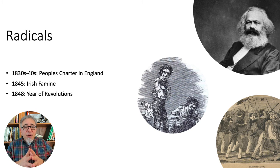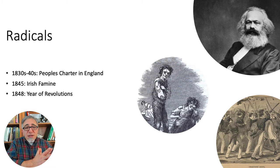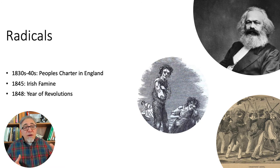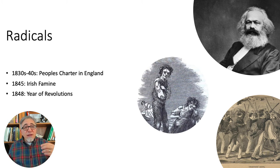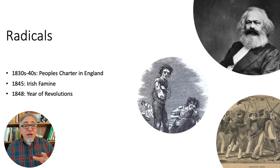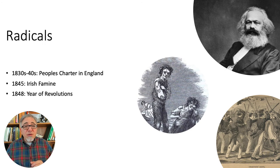In 1848, rebels temporarily took control of Vienna and they forced the Austro-Hungarian Empire to end serfdom. Southern Italians revolted against the French, who were still occupying their homeland. And a new revolution in France ended the monarchy once again and created the Second French Republic. Although revolutionary movements in the German states were less successful in changing their governments, they paved the way for changes and they resulted in massive German immigration to the United States.